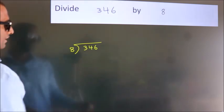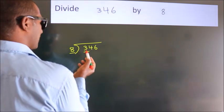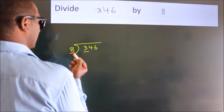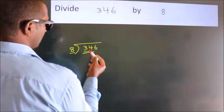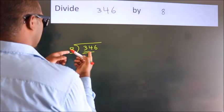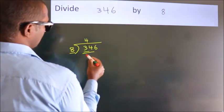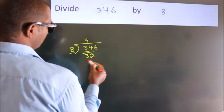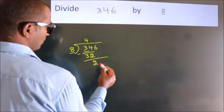Next, here we have 3, here 8. 3 is smaller than 8. So we should take 2 numbers: 34. A number close to 34 in 8 table is 8 fours 32. Now we should subtract. We get 2.